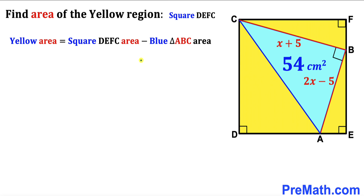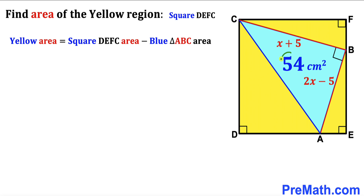Let's get started. We can observe that the area of the yellow shaded region equals the area of square DEFC minus the area of blue triangle ABC. Since the area of triangle ABC is already given to us as 54, our only remaining task is to calculate the area of square DEFC.